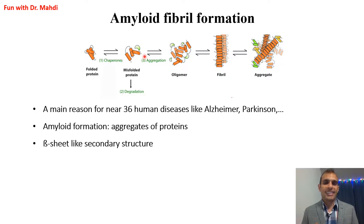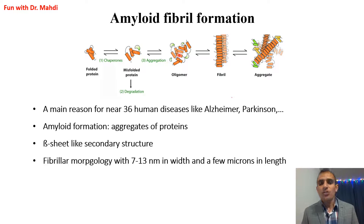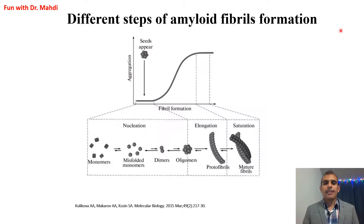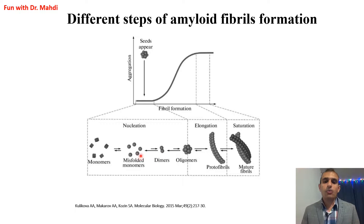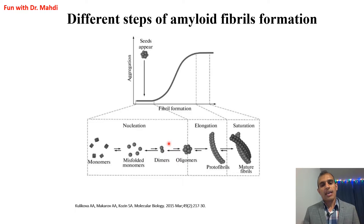In amyloid fibril formation, a folded protein first turns into a misfolded protein. Using beta-sheet secondary structure, misfolded proteins collect together in a chain called a fibril. The length of every fibril is a few microns, and the width is between 7 to 13 nanometers. In this picture you can see the different steps: folded protein → misfolded protein → dimer (two misfolded proteins) → oligomer (two to ten proteins) → protofibril → and finally, mature fibril.